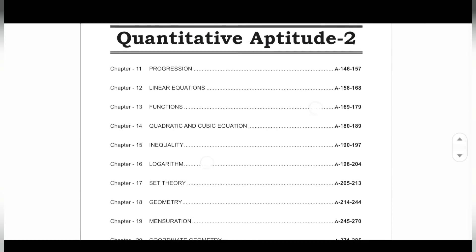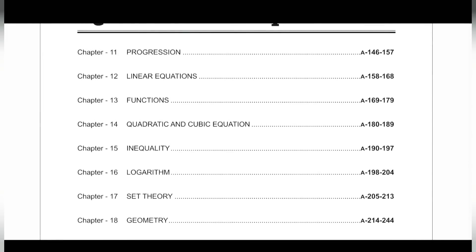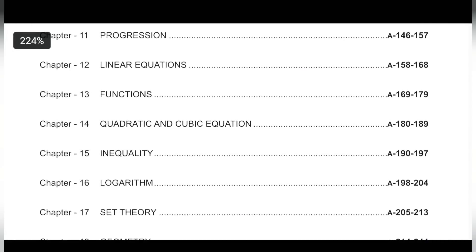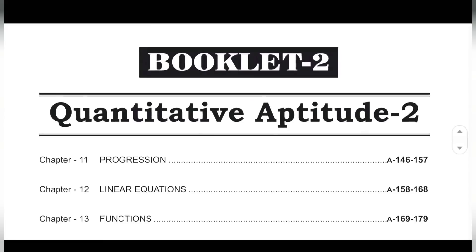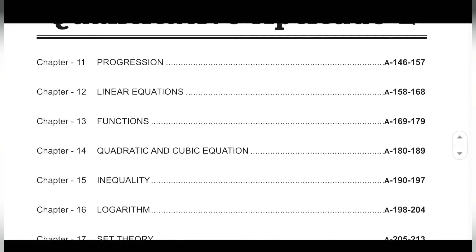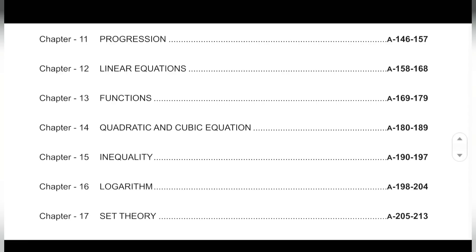Moving to chapter two, part two. AP/GP: two questions, definitely in the paper. Linear equations, quadratic and cubic: both topics together, two questions. Functions: two questions. Inequality: two questions. Logarithm: two questions. Set theory: one question. Book two is the main book we normally ignore — that's why next year my target is to focus more on book two, because this Modern Maths booklet is more important. People normally tend to ignore these topics, but all topics here are two questions each and you can pick up any of them.